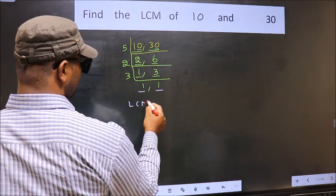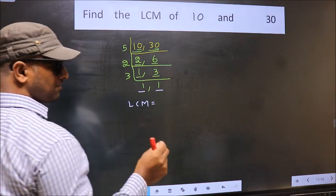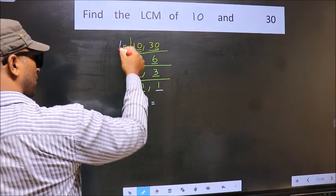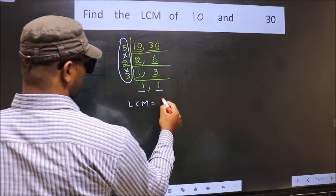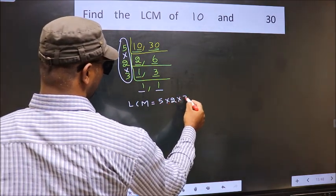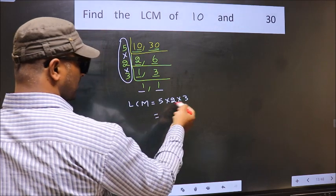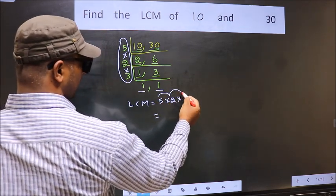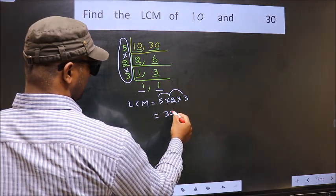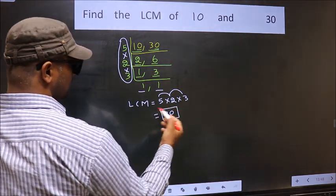So our LCM is the product of these numbers, that is 5 into 2 into 3. So let us multiply these numbers. 5 into 2 is 10, into 3 is 30. So 30 is our LCM.